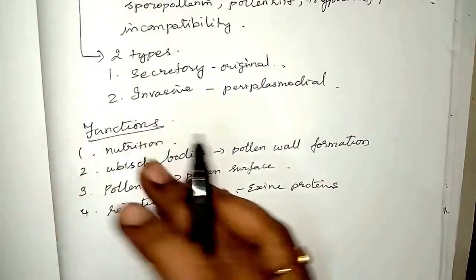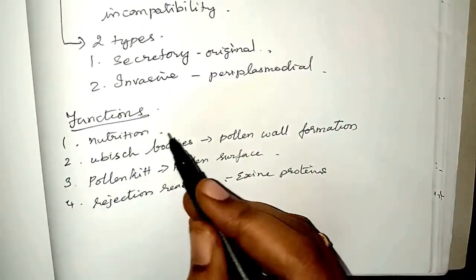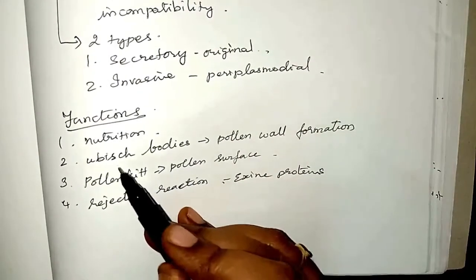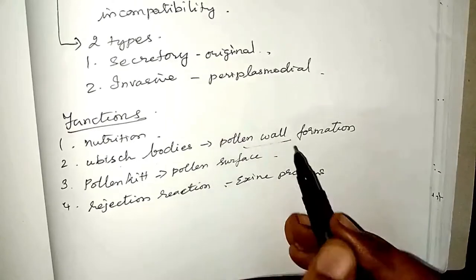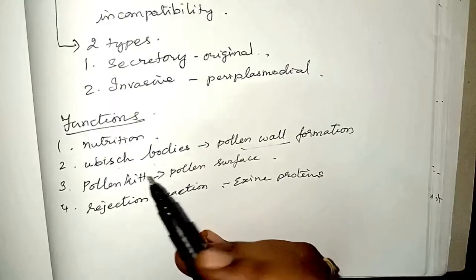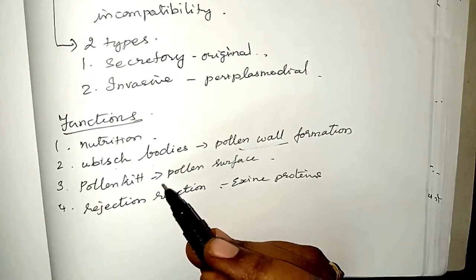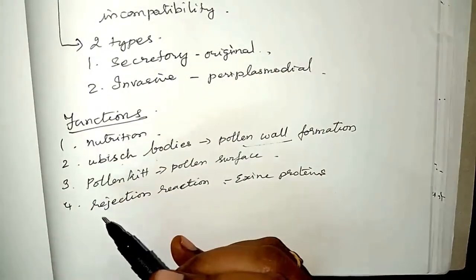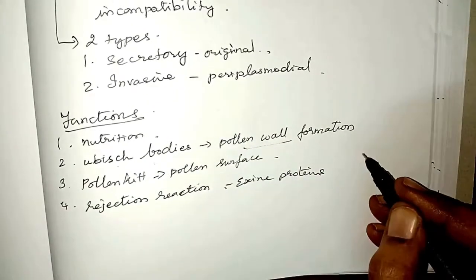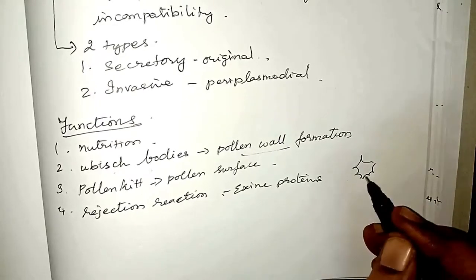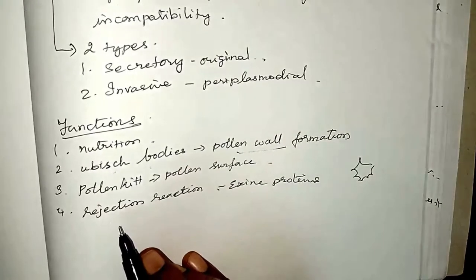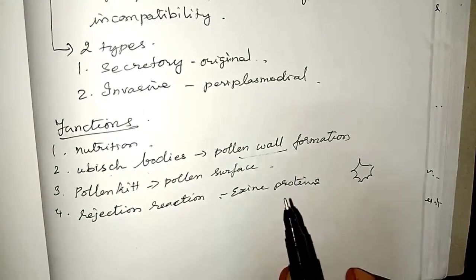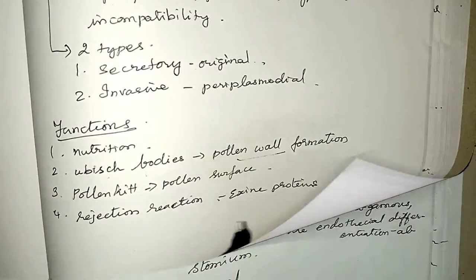The functions of tapetum are: first, it nourishes the developing microspores. Second, it contributes a substance called sporopollenin through Ubisch bodies, which plays a very important role in pollen wall formation. Third, pollen kit material is also contributed by the tapetal cells, forming the pollen surface material. Fourth, the exine protein responsible for the rejection reaction of the stigma is present in the exine cavity and is also derived from the tapetal cells.